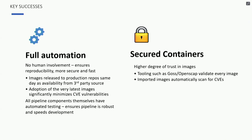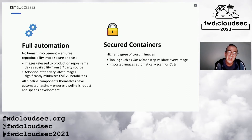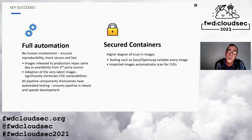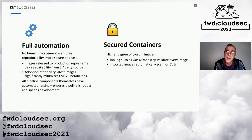What are the key successes and benefits we've seen from this approach? Having a fully automated build with an image pipeline with no human involvement at all ensures that the images are reproducible, more secure, and very importantly, very fast. We're able to get images right out into production the same day they've become available from the third-party source, and in so doing, we absolutely minimize the number of CVEs present in that image. Also, the pipeline components themselves have automated testing — every GOSS test has a test to verify it actually works and picks up violations, ensuring the pipeline itself is robust and speeds up development. By using tooling such as GOSS and OpenSCAP to validate images and automated scanning, we can have a higher degree of trust that the images we consume were built with security in mind.